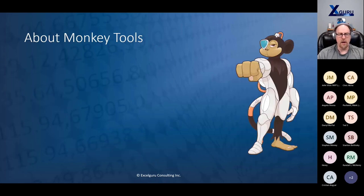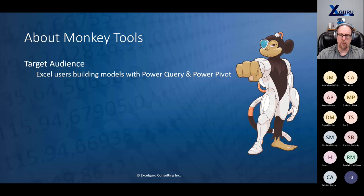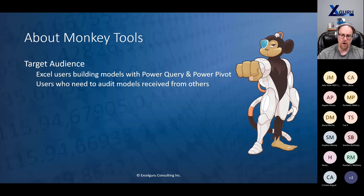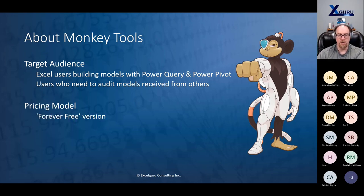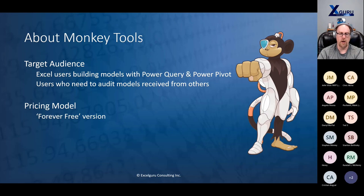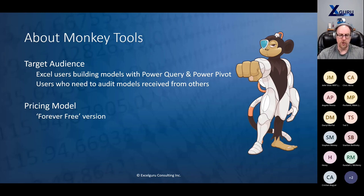This is where Monkey Tools comes into play. The target audience is Excel users generally that are building models with Power Query and Power Pivot, though we also connect to Power BI models to audit and see what's going on. There are three pricing levels: a forever free version — one of the reasons I'm an MVP is community contributions, and I wanted to make sure there was a significant set of free features that would justify installing it. I only have one code base, which means whenever I publish a bug fix, it goes into all versions. I'm not interested in having a free version with bugs where the pro version doesn't.